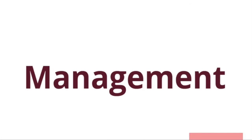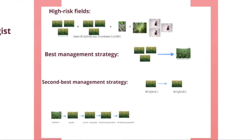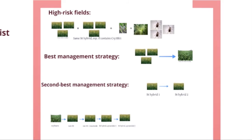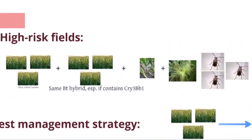Let's talk about specific management recommendations for corn rootworm management — what is thought to be a high risk field for unexpected corn rootworm damage. If you have grown continuous corn for at least three years, if you've used the same BT hybrid and especially single-trait hybrids expressing CRY-3BB1, if you have seen damage indicative of corn rootworm presence such as goosenecking or lodging, and finally if you have seen unusually high numbers of adult beetles, you are likely in the high risk category for rootworm infestations.